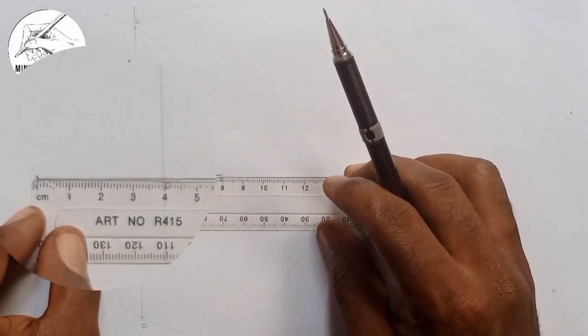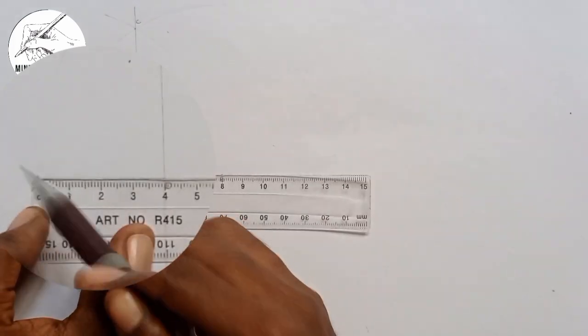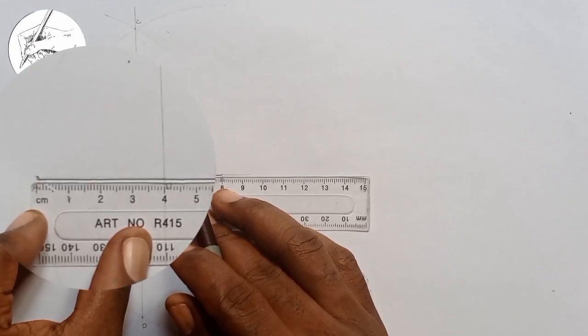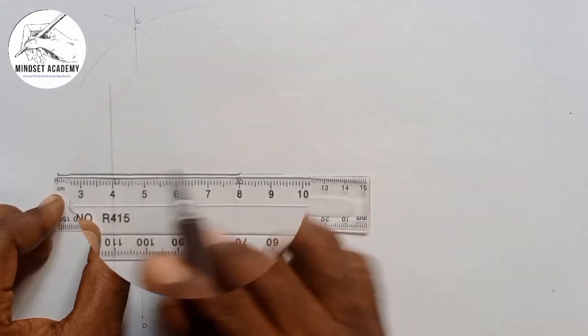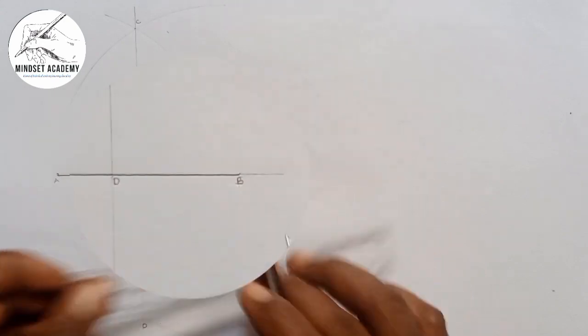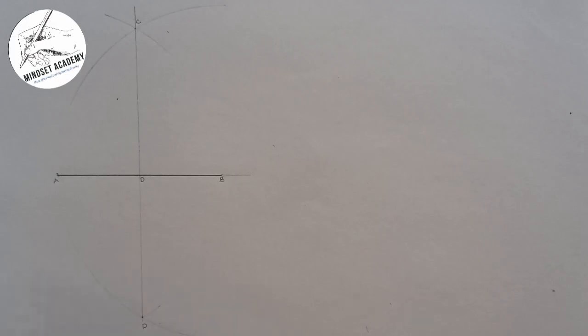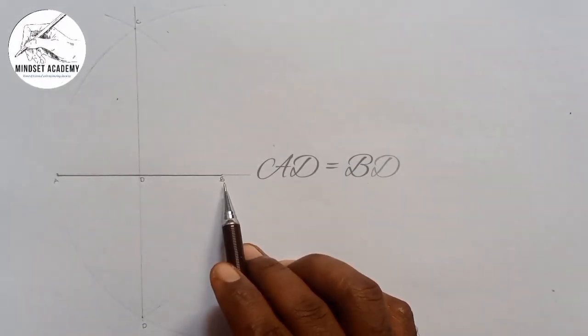You can see that from A to D is 40, and D to B is also 40. So we can easily say that AD equals BD equals 40.